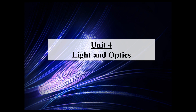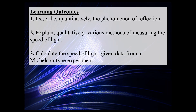Hello Physics 30s. In today's lesson we are going to start on the next unit of study in Physics 30 dealing with light and optics. For today's lesson we're going to specifically focus on: one, describing quantitatively the phenomenon of reflection; two, explaining qualitatively various methods of measuring the speed of light; and three, calculating the speed of light given data from a Michelson type of experiment, which actually did result in an accurate value for the speed of light.